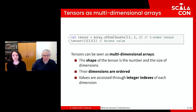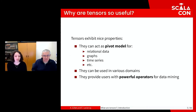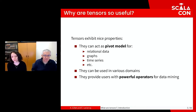From the developer's point of view, tensors are multidimensional arrays. Their shape includes both the number of dimensions and the length of each dimension. The order of their dimensions is fixed at creation, and values are accessed with integers representing an axis of each dimension. With their modeling capabilities, tensors can be seen as pivot models. They can naturally represent relational data, graphs, and time series.